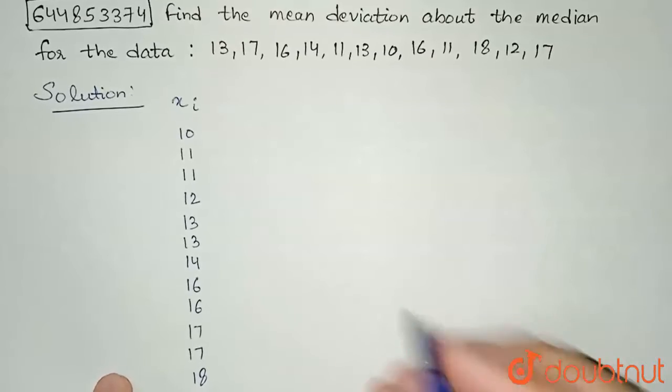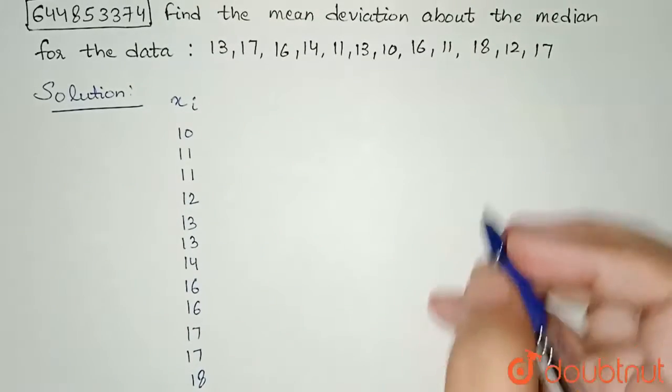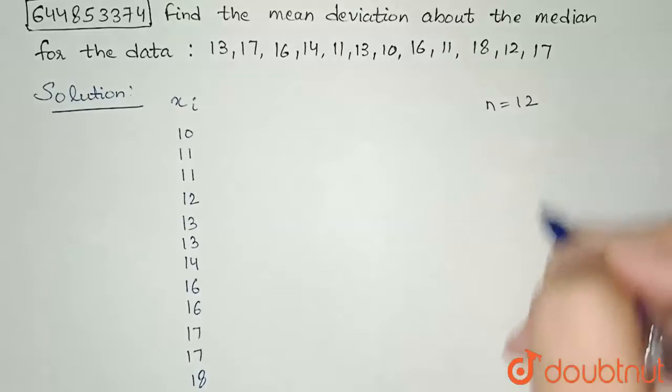So these are my observations given to me. I can observe here that n equals 12, that is the number of terms given to me is 12.